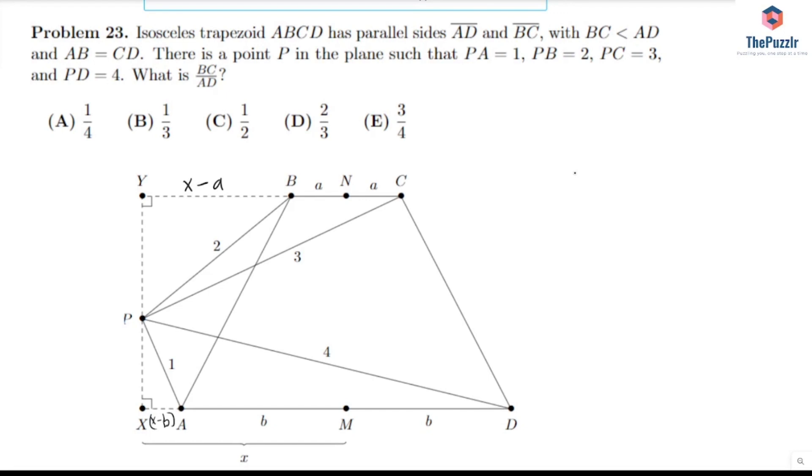Okay, so now we can utilize the Pythagorean theorem. Let's use that on this triangle right here. So we have PX squared plus, let's say, the whole thing. So XD is X minus B plus B plus B. So X plus B squared equals 4 squared because the hypotenuse is 4. So that's our triangle right there.